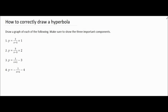To correctly draw a hyperbola, you want to locate your asymptotes — both the horizontal and the vertical asymptote — and then find the x-intercepts and y-intercepts. That's all you need to draw a hyperbola.